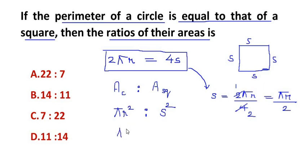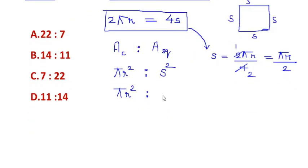Now we have the area of the circle as πr². In place of s² we can replace it with (πr/2)². The whole term is squared, so when we open up the brackets we get πr² : (πr/2)².